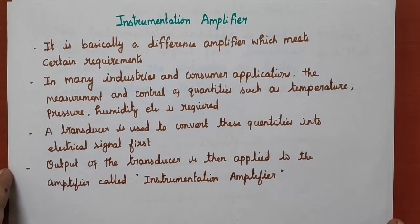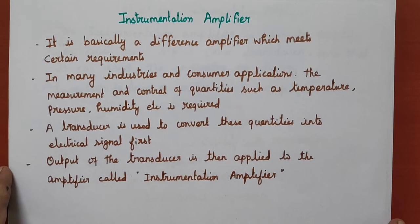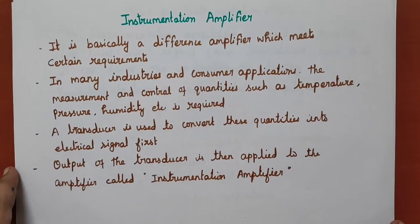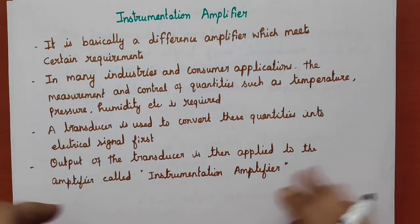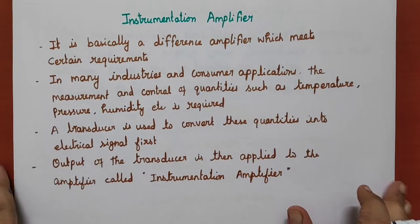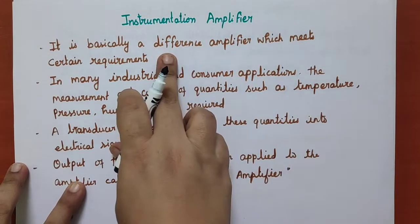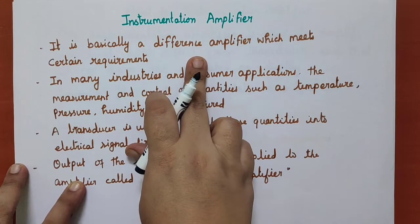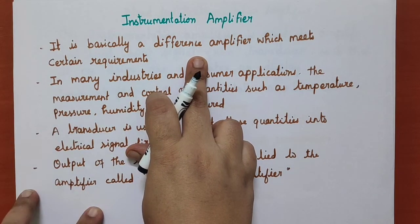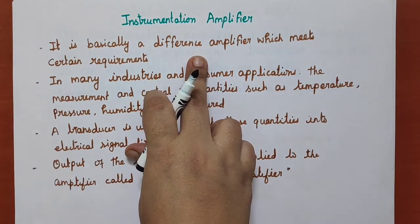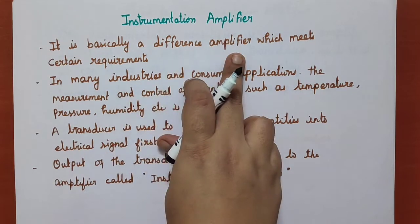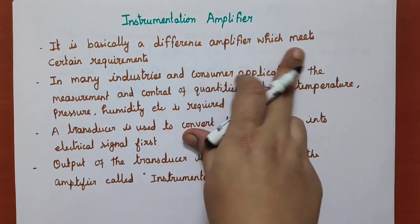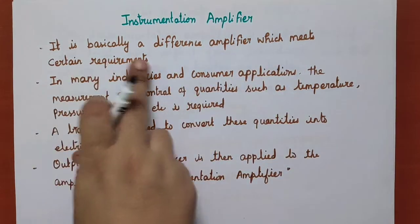Hello all. In this video we are going to see about instrumentation amplifier and its derivation. Instrumentation amplifier is basically a difference amplifier which meets certain requirements. A differential amplifier amplifies the difference between two input signals. Instrumentation amplifier is also a type of differential amplifier which meets certain requirements.